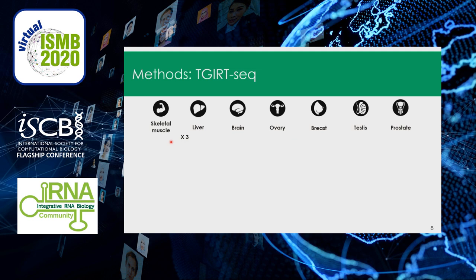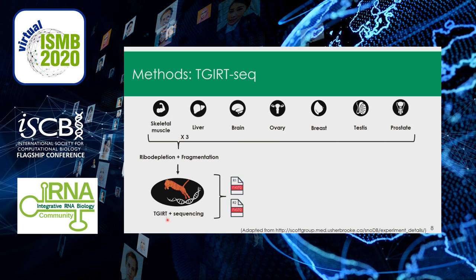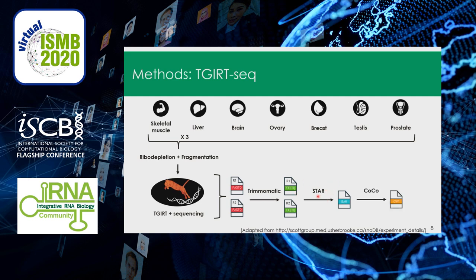We started with seven healthy human tissues with three biological replicates each: skeletal muscle, liver, brain, ovary, breast, testis, and prostate. We first ribodepleted the samples and fragmented them. Next, we reverse transcribed with TGIRT and sequenced to obtain our paired-end reads. We trimmed these reads with Trimmomatic to remove low-quality reads, aligned them to the human genome hg38 using the aligner STAR, and finally assigned reads to genes using a tool developed by our lab called COCO.